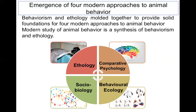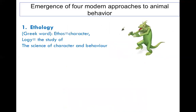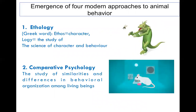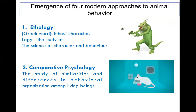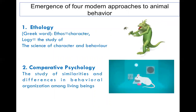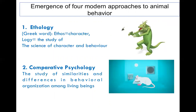We will discuss all four topics in detail in this chapter. Ethology is the science of characters and behavior. Comparative psychology is the study of similarities and differences in behavioral organization among living beings — how animals differ from one another and how they show similar or different responses to various stimuli.